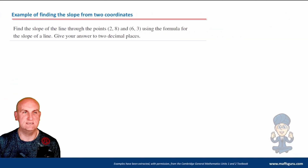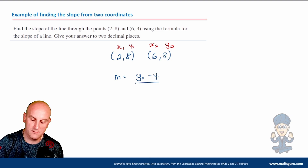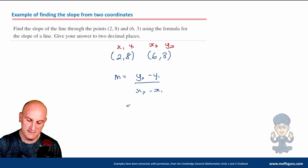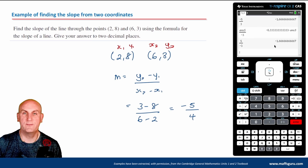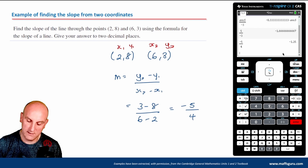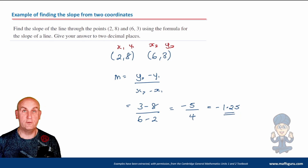Find the slope of the line passing through (2, 8) and (6, 3). I label them x1, y1 and x2, y2. My formula is m equals y2 minus y1 over x2 minus x1. So that's 3 minus 8 over 6 minus 2, which is negative 5 over 4. On the calculator: minus 5 divided by 4 gives minus 1.25, which is already to two decimal places.